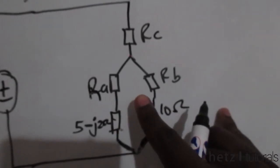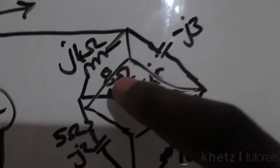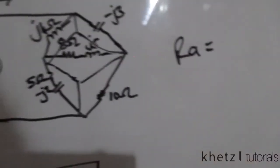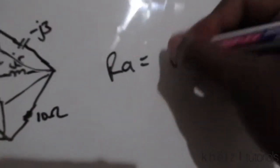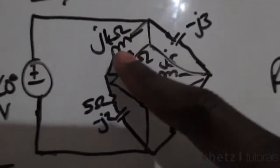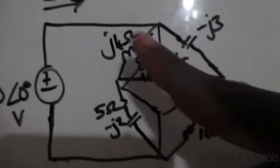Let's do our Y transformation. To find the value of RA — which would be situated somewhere here if you were to draw it in the delta at the top — you look at the two impedances which RA is found in between. These two impedances are J4 and 8+J5, so those are the two impedances which RA finds itself between.